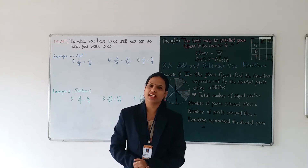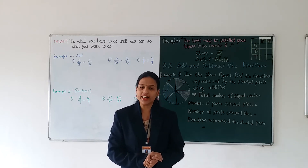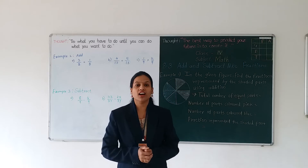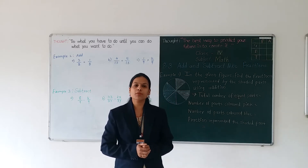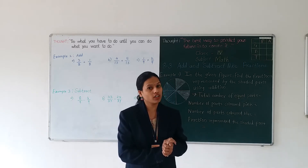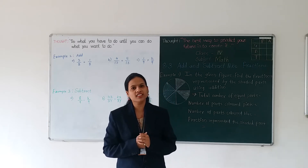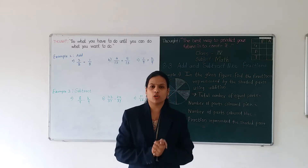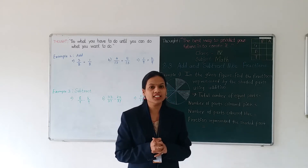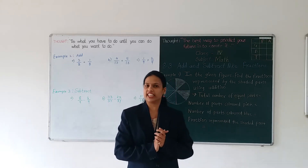My dear students, we have started chapter number 8, that is fractions. In the last sessions, we have already learnt about how to write a fraction of a shaded part. In concept 8.2, we have learnt about what is a like fraction and what is an unlike fraction. Do you remember? Can you tell me what is a like fraction? The fraction with same denominators is called a like fraction, and the fraction with different denominators is called an unlike fraction.